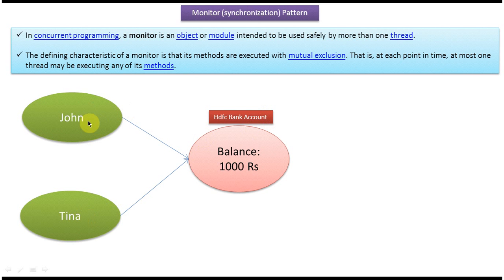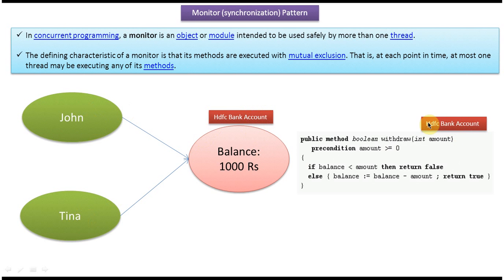Both of them can withdraw money from this HDFC bank account. Here you can see the HDFC bank account which is a class, and this class has one method — the method is withdraw, and you can see it takes int amount as a parameter. So suppose John or Tina wants to get some amount from this particular HDFC bank account, then they have to pass the amount. Suppose they are passing 500.